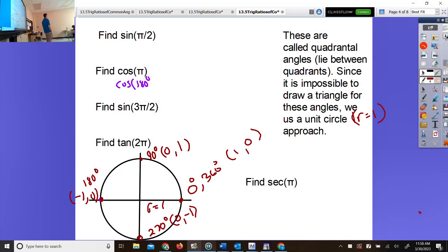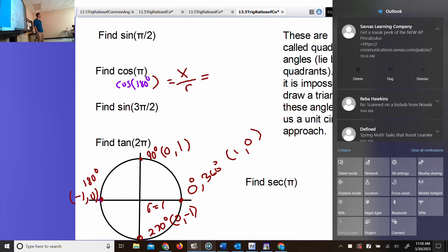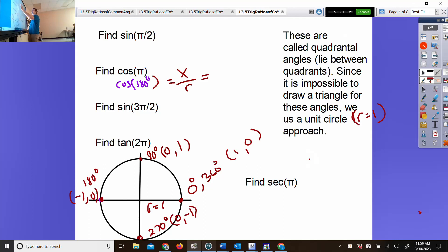Since we can't draw triangles, we use the unit circle. Cosine of π, I rewrote as cosine of 180 degrees. What's the ratio on the circular approach for cosine? x over r. If you're at 180 degrees, what's the x-coordinate? Negative one. What's the radius? One. Cosine of 180 degrees is negative one.